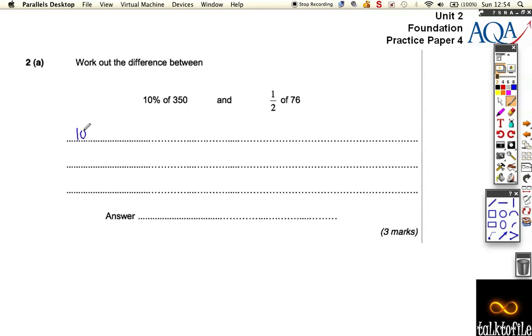Well, if we work out the actual numbers first, if everything is 350 for that one, 10% means I divide it by 10, which is 35.